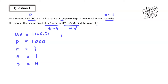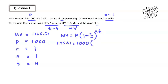Next, we write down the formula: MV equals P times bracket 1 plus R over N, the whole thing to the power of NT. So: 1,125.51 equals 1000 times bracket 1 plus R over 1, to the power of 1 times 4. After that, we move 1000 over to the left — since 1000 is multiplied with the bracket, it becomes divided by 1000. So 1,125.51 divided by 1000.